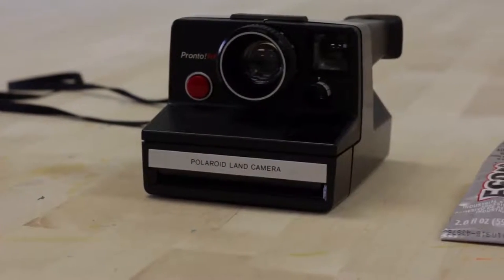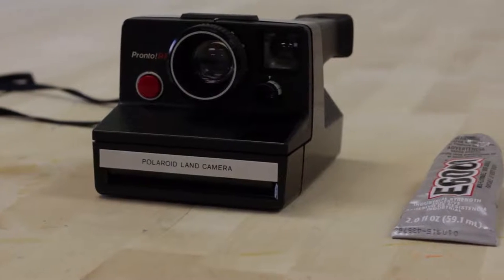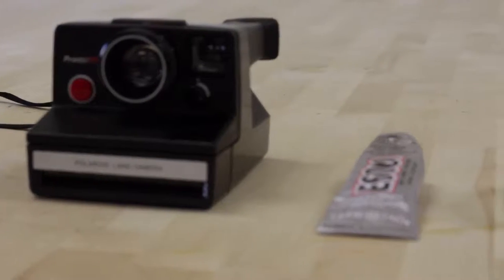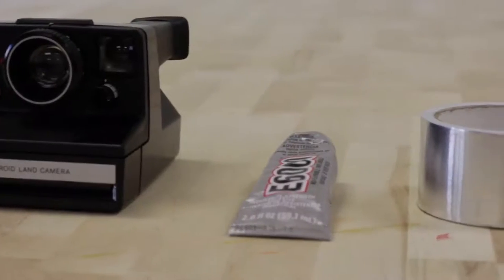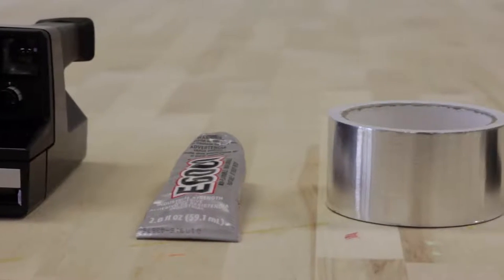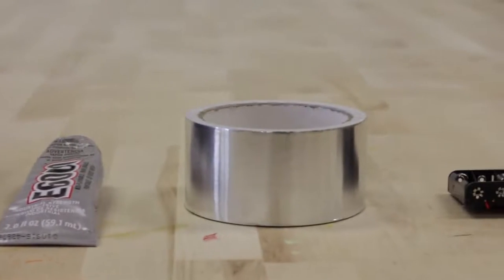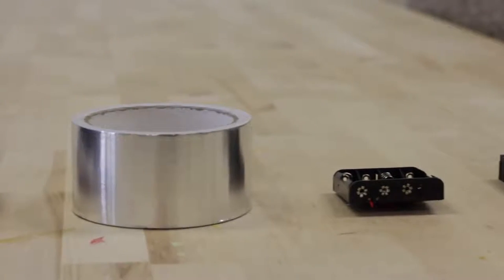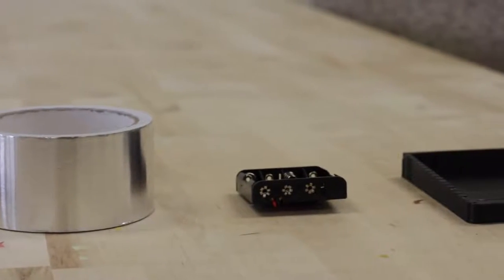The things you're going to need for this project are a Polaroid camera. I'm using e6000 as a glue. Then you're going to need some foil tape, and that's what we're going to use for the contacts. Then we're going to use a six volt battery pack, which is going to be four double A batteries.